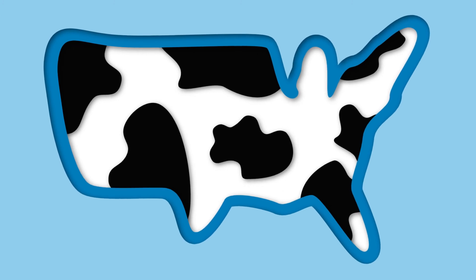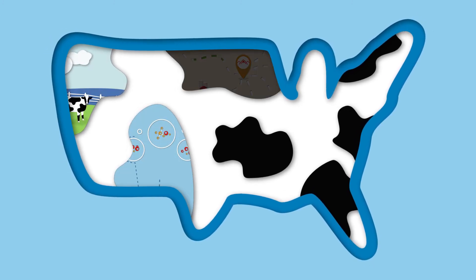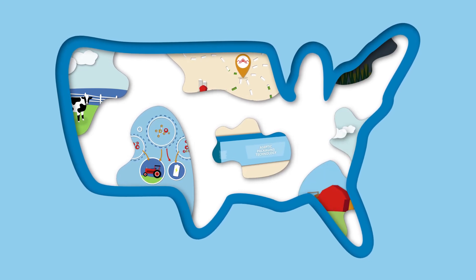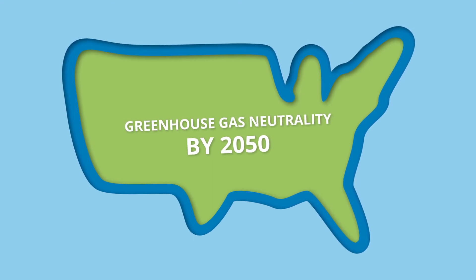Dairy farmers are essential for U.S. efforts to address climate change. Dairy Gold farms and processing facilities are already using the latest agricultural methods and technologies to cut greenhouse gas emissions and reach greenhouse gas neutrality by 2050.